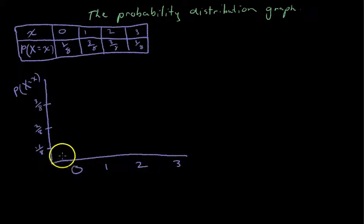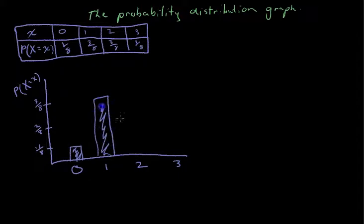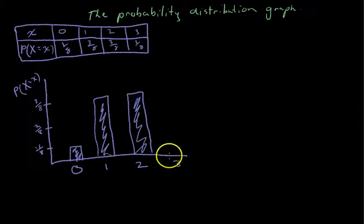It's really just a column graph. The probability of 0 happening is 1/8, the probability of 1 happening is 3/8, the probability of 2 happening is 3/8, and the probability of 3 happening is 1/8.